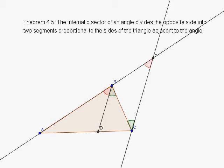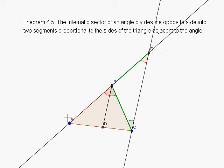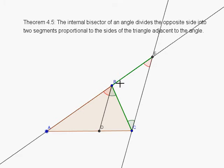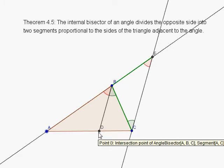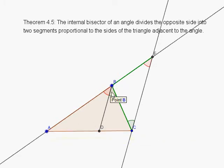So, in particular, side BC has exactly the same length as side BE. Now, this is going to be important because we're now going to point out that triangle ABD here is similar to triangle AEC.